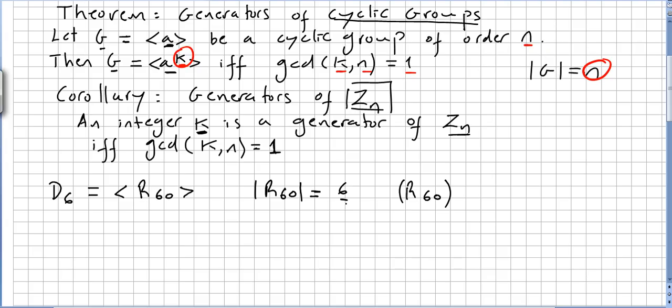So if this is order 6, you need a number where the greatest common divisor would be 1. So it cannot be 4, it cannot be 3 and it cannot be 2. So it will be 5, which means the rotation of 300 degrees, 5 times 60. So D6 is generated by the rotation of 60 degrees and the other generator is the rotation of 300 degrees. Of course you can do this through direct calculation, but this theorem is really helpful for this.